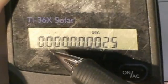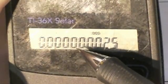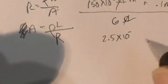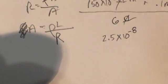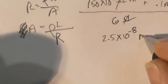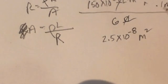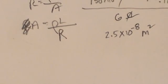And I'm going to come up with 2.5 times 10 to the negative. And I've got 1, 2, 3, 4, 5, 6, 7, 8 times 10 to the negative 8 meters. And that's my cross-sectional area with the proper units.